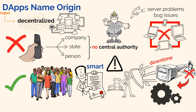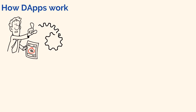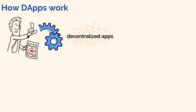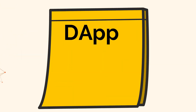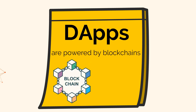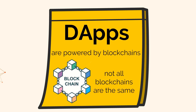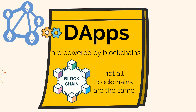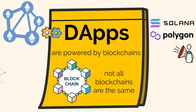But since we're only scratching the surface here, let's dive deeper into how dApps actually work. Before I get into the inner workings of these decentralized apps, it is important to remember that dApps are powered by blockchains. And not all blockchains are the same. While a huge majority of all dApps are built to run on the Ethereum network, some blockchains like Solana and Polygon are stepping up to offer the same utility on their networks too.